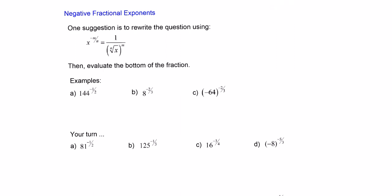For these next problems we deal with negative exponents. For x to the negative m over n, we write it as 1 over the nth root of x, all raised to the m — using the reciprocal rule. For 144 to the negative 1 half, we write 1 over the square root of 144, raised to the 1. The square root of 144 is 12, so the answer is 1 over 12.